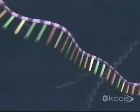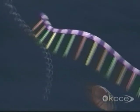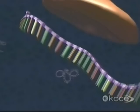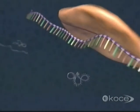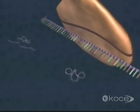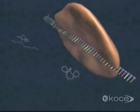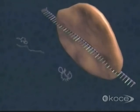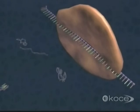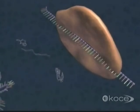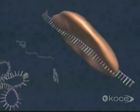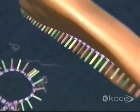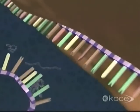Translation begins with the binding of a messenger RNA to a small subunit of a ribosome, the cell's workbench for protein assembly. When properly positioned, the messenger RNA triggers the approach of a tRNA, which carries the first amino acid. The tRNA attaches only if its three nucleotides exactly match the first three coding nucleotides of the mRNA strand.